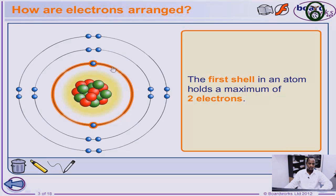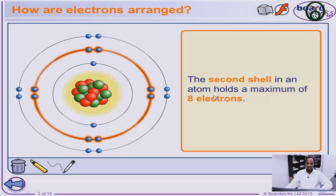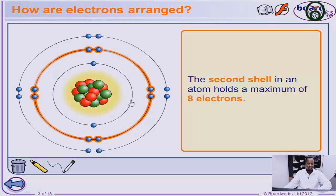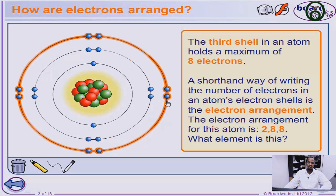The first shell in an atom holds a maximum of two electrons. The next shell — the second shell in an atom — holds a maximum number of eight electrons, because the formula 2n squared gives 8 for n equals 2. So eight electrons are held in the second shell. If one shell is filled up, the electrons automatically go to the next shell. If eight is filled up in this shell, it goes to the third one. In the third shell, the maximum number of electrons is also eight.